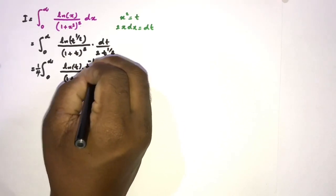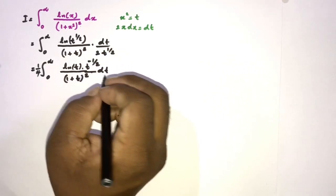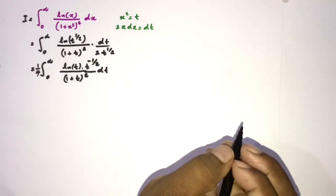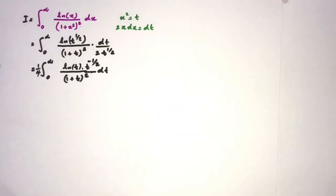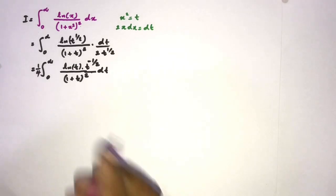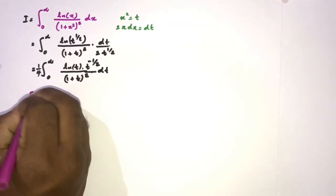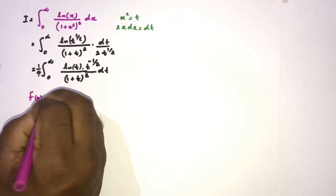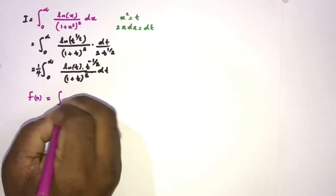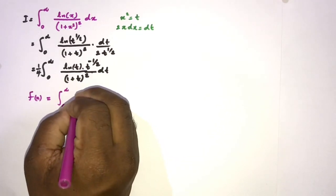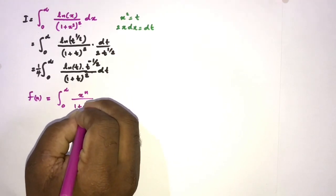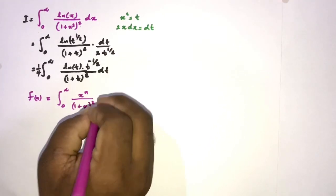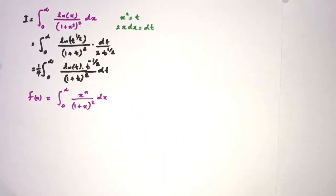With t to the one-half in the numerator, we write t to the minus one-half. I am going to define an auxiliary integral function: f(n) equals the integral from 0 to infinity of x to the n over 1 plus x squared, dx.